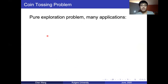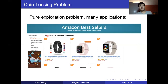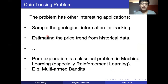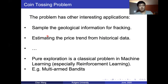This is a pure exploration problem in the field of TCS and machine learning, and it has many interesting applications. For example, to find the Amazon best seller, we sample each product several times and decide which is most popular. Other applications across different domains can also be linked to the coin tossing model. This pure exploration model is also a classical problem in reinforcement learning — the popular multi-armed bandit problem is actually a variation of the coin tossing model.